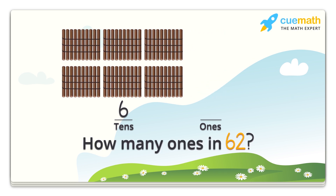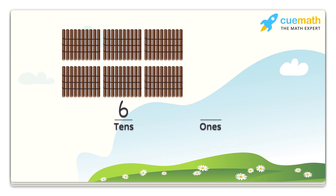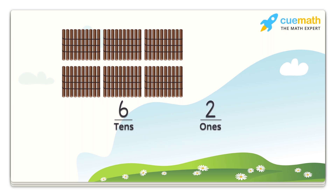How many ones do we have in the number sixty-two? Yes, we have two ones. So let's take two loose sticks. Now we have sixty-two sticks in total.